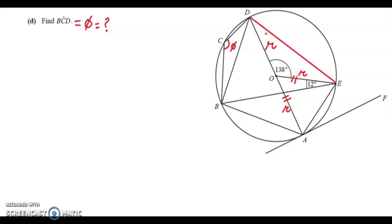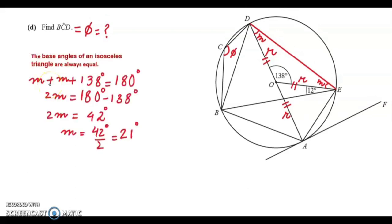I have drawn a line DE with red color which again makes this triangle OED as an isosceles triangle. We can use the same property that this angle M and M, these two are base angles of this isosceles triangle ODE, so they must be equal. We can easily find this angle M by using the property of the triangle that inner angles sum to 180 degrees. By virtue of this property of an isosceles triangle, I have solved this equation to find M which equals 21 degrees.